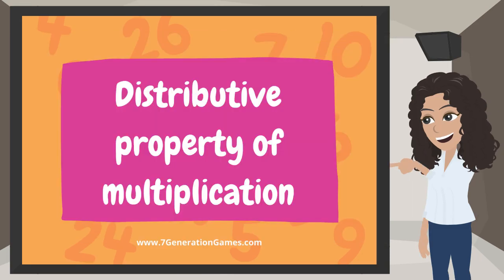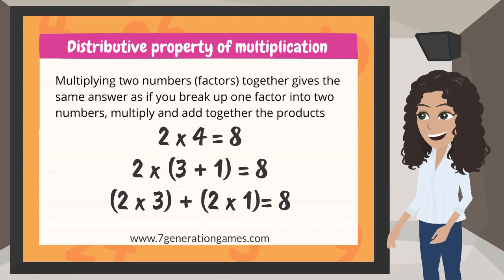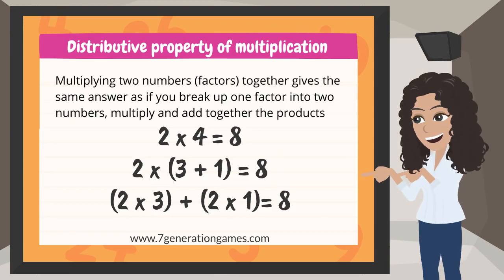Distributive Property of Multiplication: multiplying two numbers (factors) together gives the same answer as if you break up one factor into two numbers, multiply, and add together the products. For example, 2 times 4 equals 8. You get the same answer if you take one factor, 4, and break that up into two numbers.